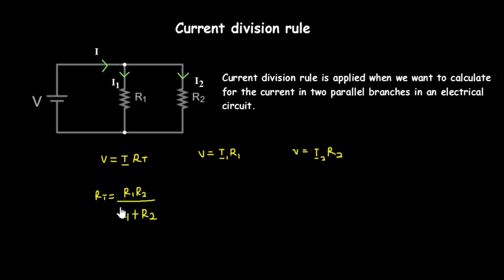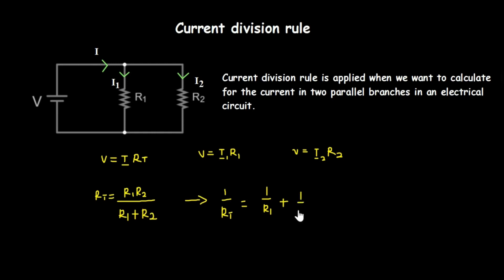We use that product-over-sum formula only when you have exactly two resistors in parallel. When you have more than two resistors in parallel, you use the formula: one over R_t equals one over R1 plus one over R2 plus one over R3, continuing to the last term one over R_n.